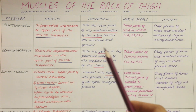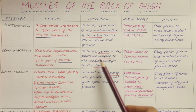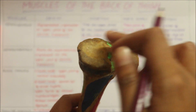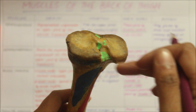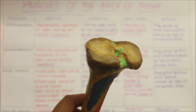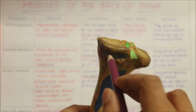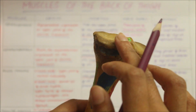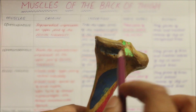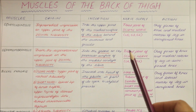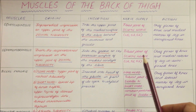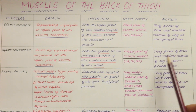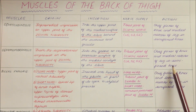The semimembranosus inserts into the groove on the posterior surface of the medial condyle of the tibia. These are the condyles of the tibia — this is the medial condyle and this is the lateral condyle. The insertion is right here. The semimembranosus is supplied by the tibial part of the sciatic nerve, and its action is that it is a chief flexor of the knee and medial rotator of the leg in the semiflexed knee.